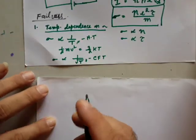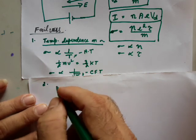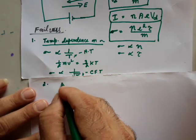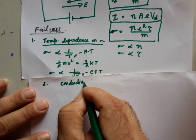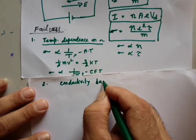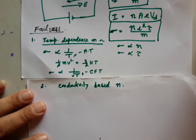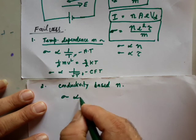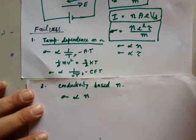The second important failure of the classical free electron theory concerns sigma — that is, conductivity — based on n, the number of electrons per unit volume. The classical free electron theory says sigma is proportional to n. Let me give you three different examples.